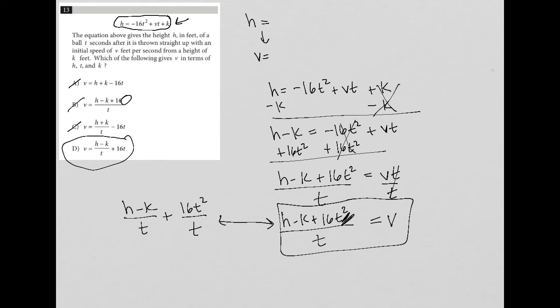You can always split up a larger fraction in this way, okay? And then because I have a t squared and a t in this second fraction, the t here would cancel out one of the t's, because t squared is t times t. So cross out one of the t's from there, leaving me with exactly what answer choice D says, h minus k divided by t plus 16t. So that's the best answer.